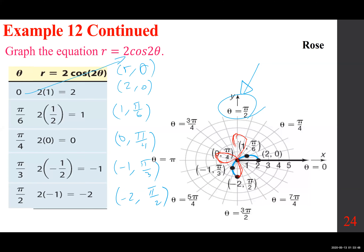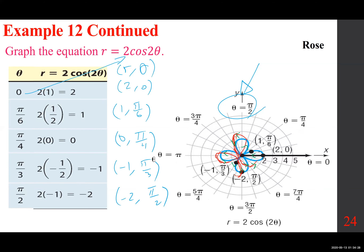If you want to graph this by hand, you go from pi over 2 to pi and see what happens, then pi to 3 pi over 2, then 3 pi over 2 to 2 pi. When you work it out, it goes something like this — it just keeps going. I'm trying to show you in what order it works. I'll show you a better graph in a moment.